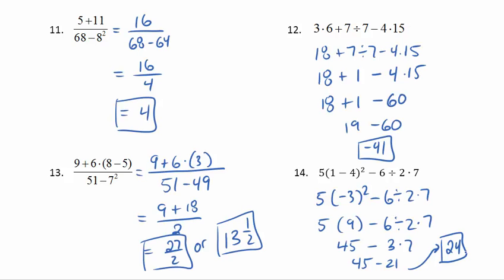You may want to pause here to check the answers against your work. Note that in problem 13, the division didn't work out evenly, giving 27 over 2. That's fine — we leave it as a fraction, which is 27/2, or the mixed number 13 and a half.